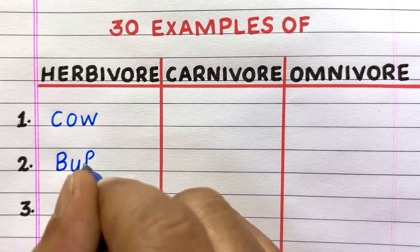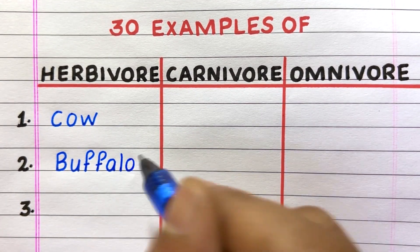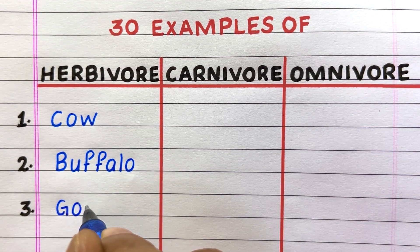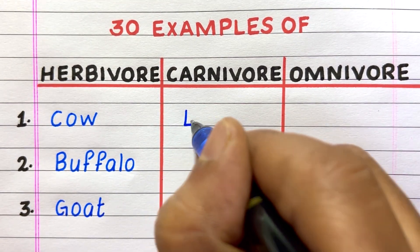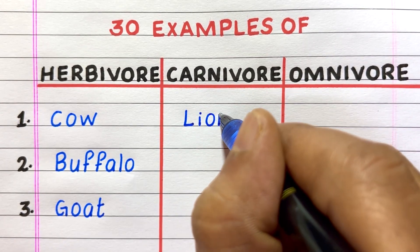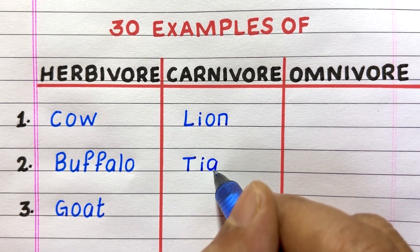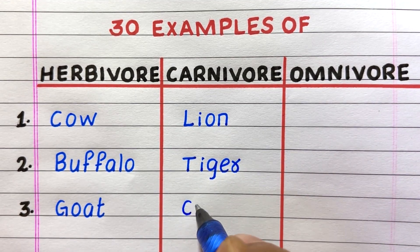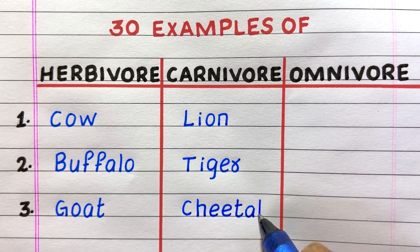First example of a herbivore is cow, second buffalo, third goat. First example of a carnivore is lion, second tiger, third cheetah.